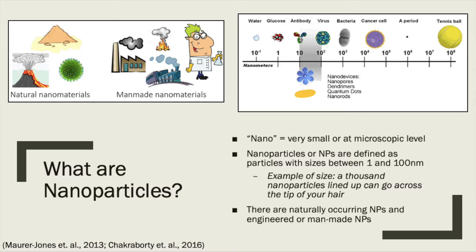Nanoparticles are not new to the environment and occur naturally in the form of minerals, clays, and products of bacteria. Nanoparticles can come from bulk material. Bulk material are those dry materials which are powdery, granular, and lumpy in nature, and are stored in heaps such as minerals, ores, coal, sand, salt, chemicals, sugar, flour, etc. They can also be found in volcanic ash, ocean spray, dust, and even biological matter.